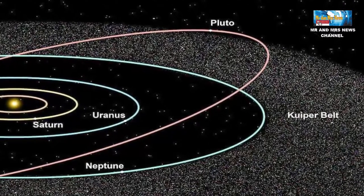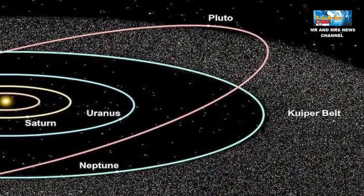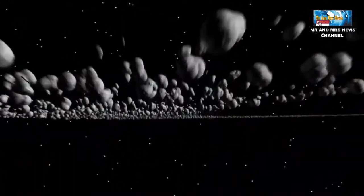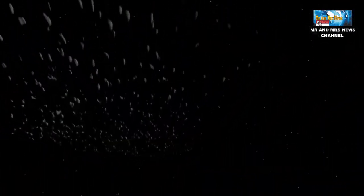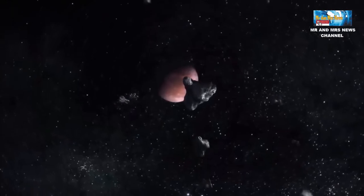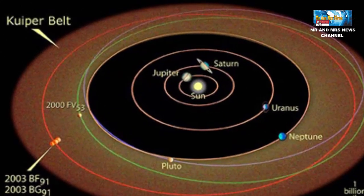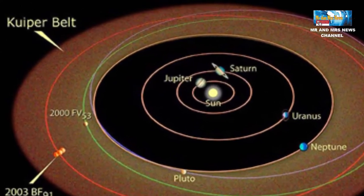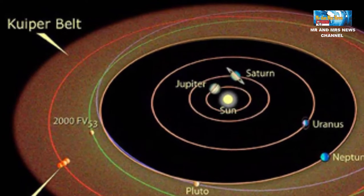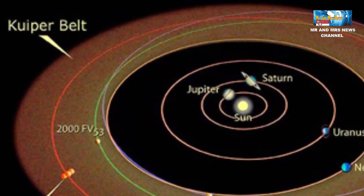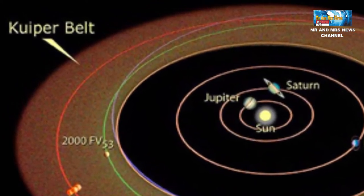Sebenarnya Sabuk Kuiper ini memiliki nama lengkap Sabuk Kuiper Edgeworth. Nama ini diambil dari nama penemunya, Gerard Kuiper dan Kenneth Edgeworth. Kuiper membuat teori mengenai diskus material yang berada di bagian terluar tata surya. Sedangkan Edgeworth membuat teori mengenai keberadaan material di area tersebut. Material tersebut diduga merupakan sisa dari pembentukan matahari dan planet-planet karena berisikan informasi tentang nebula.